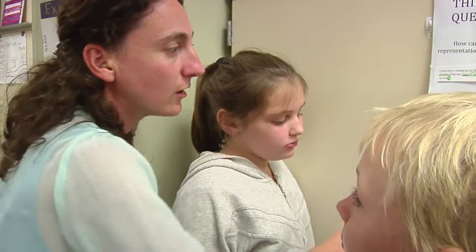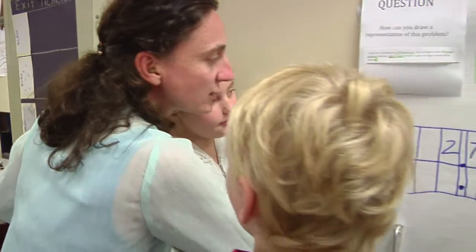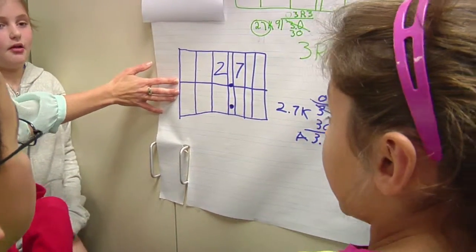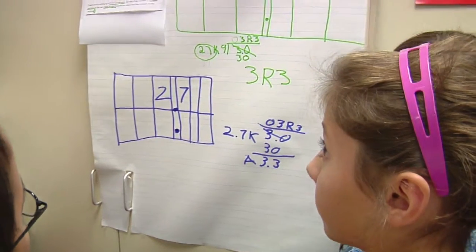Do you think that that's a strategy you would like to use? I see that another group has already started a place value chart. Would you like to continue with this place value chart? Yes. Because I think it shows the place value.